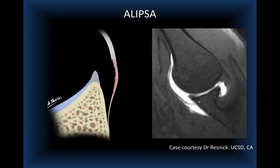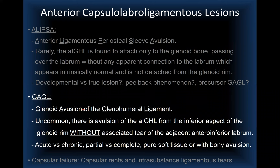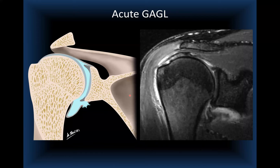GAGL — glenoid avulsion of the glenohumeral ligament — is the big brother of ELSA: a complete soft tissue avulsion of the glenohumeral ligament with the anteroinferior labrum intact. Like ALPSA and Bankart, it can be acute or chronic, partial or complete, and rarely has a small bony avulsion at the glenohumeral ligament footprint. A case shows the tear at the glenoid insertion with a normal labrum.